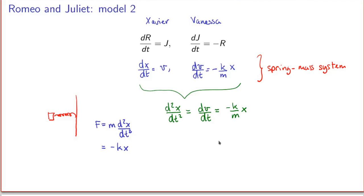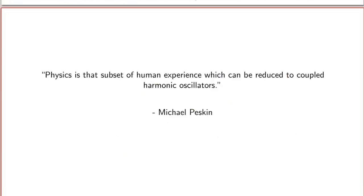The spring-mass system is an example of something more general in physics called the harmonic oscillator, which is extremely important in physics. There's a beautiful quote by physicist Michael Peskin: 'Physics is that subset of human experience which can be reduced to coupled harmonic oscillators.' That's a great quote, and a good way of ending this video.